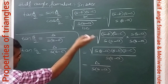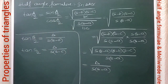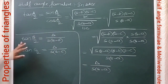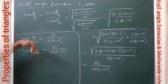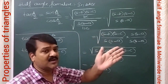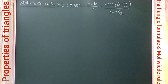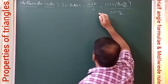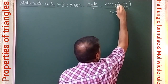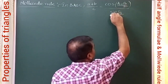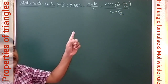By reciprocating these, we get cot(A/2), cot(B/2), and cot(C/2) formulas. Now in triangle ABC, we have to prove that (a + b) / c = cos((A − B)/2) / sin(C/2).